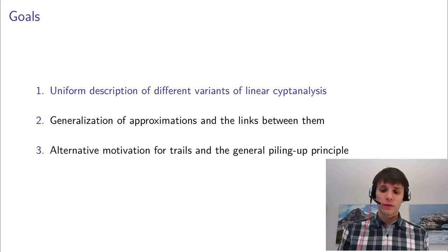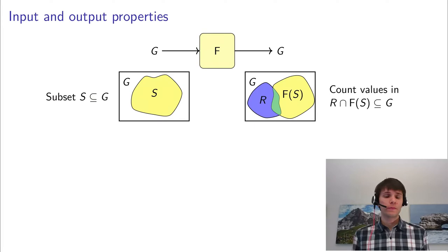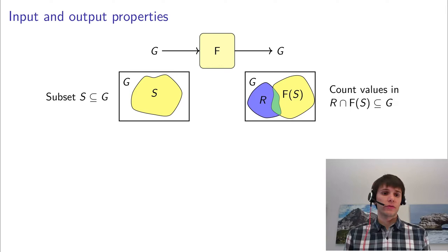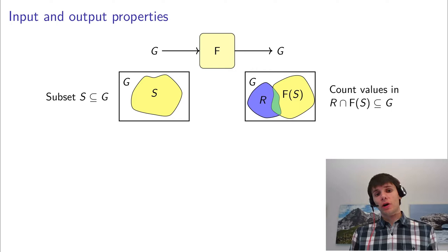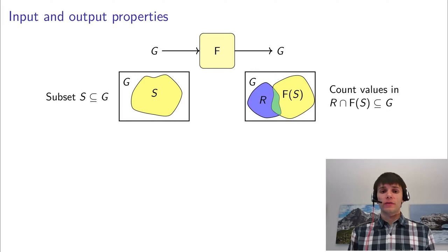So what are input and output properties? An input property could be, for example, that we say that the input is an element of a set S. So we have a subset S of the domain of your cipher G. And then an output property could be that we want to count how often the output is in a certain set R.